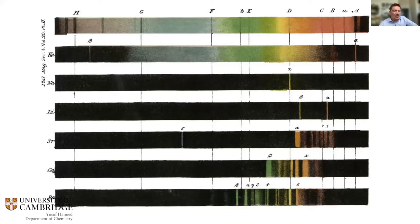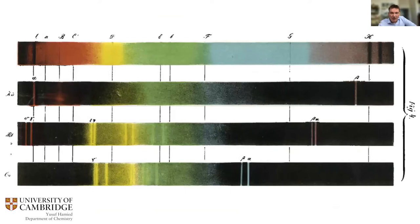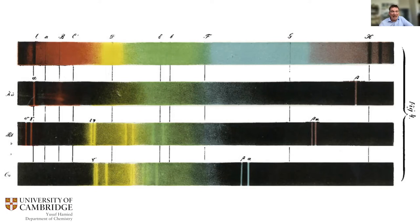They stated: 'We believe that, relying upon unmistakable results of spectrum analysis, we are already justified in positively stating that, besides potassium, sodium, and lithium, the group of alkaline metals contains a fourth member.' In a fuller report the following year, they found two new alkaline metals — rubidium and cesium — after analyzing 44 tons of mineral water from Dürkheim.